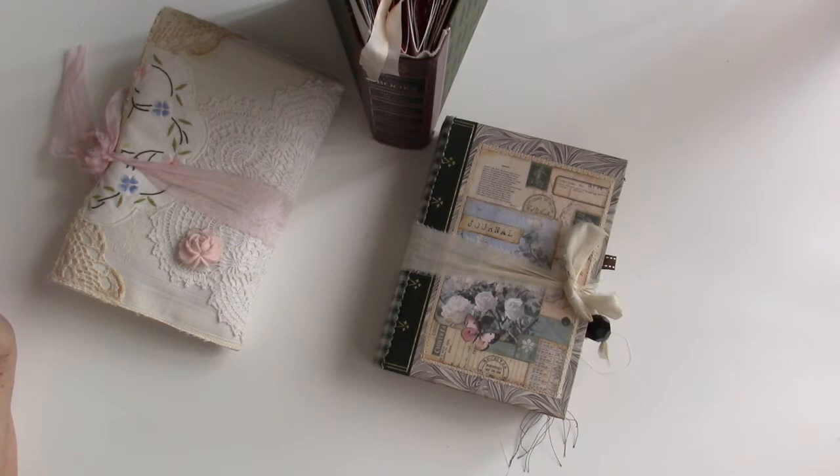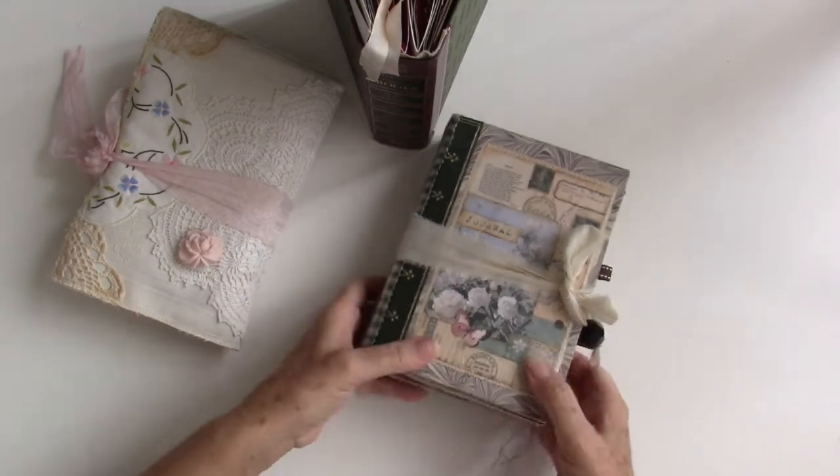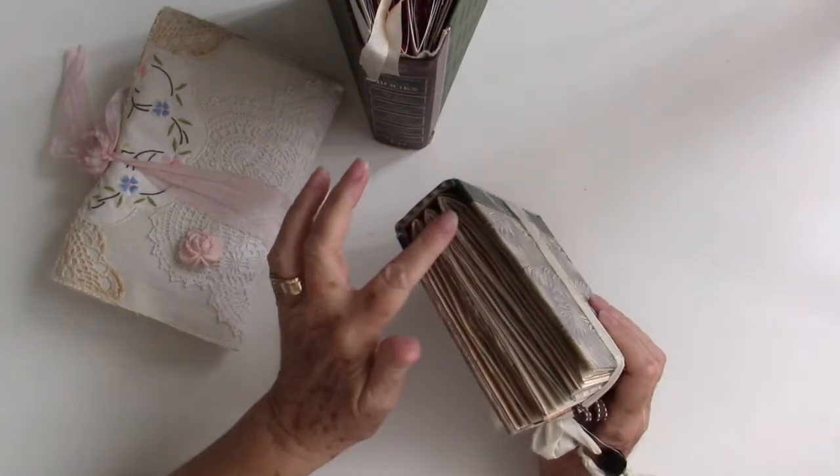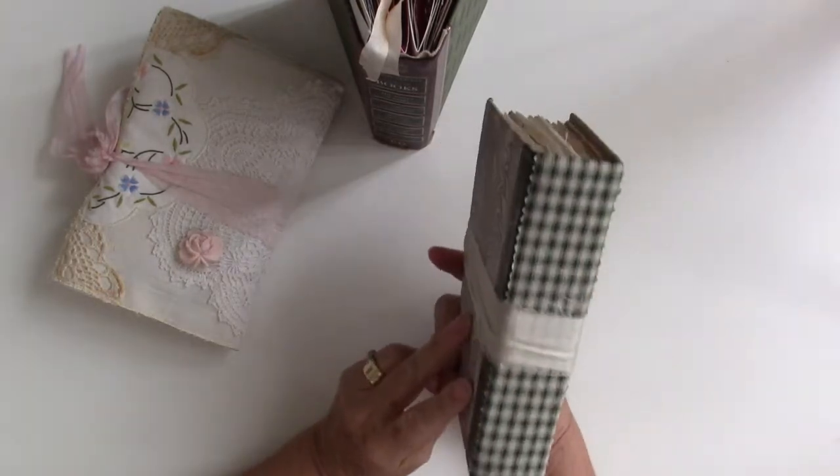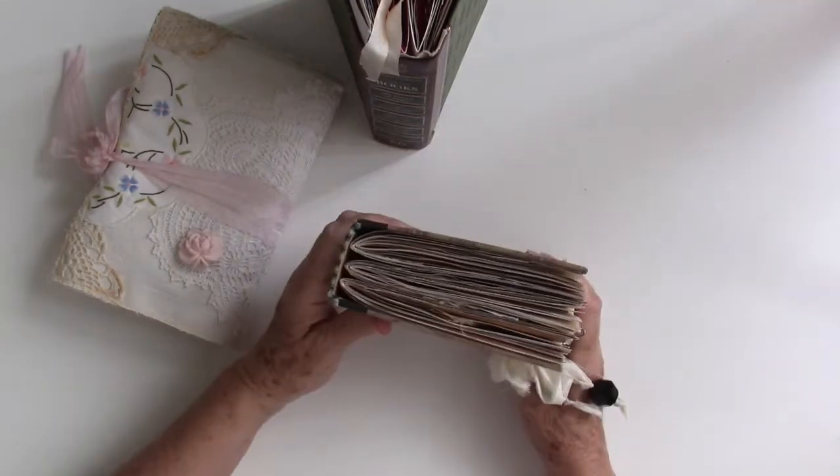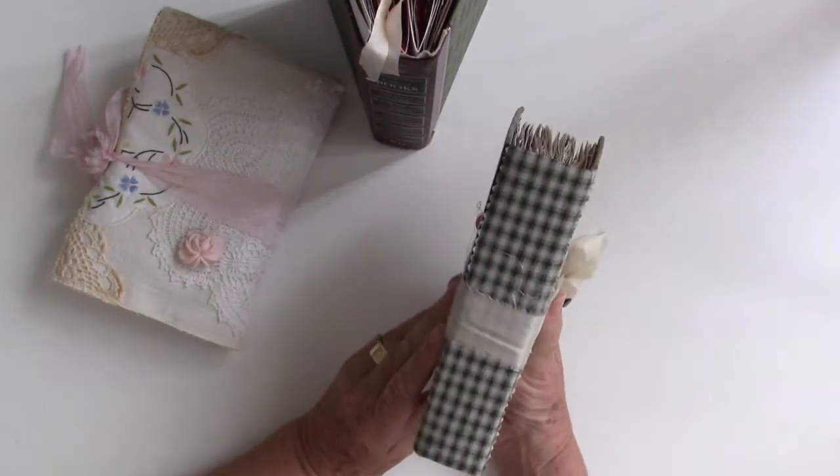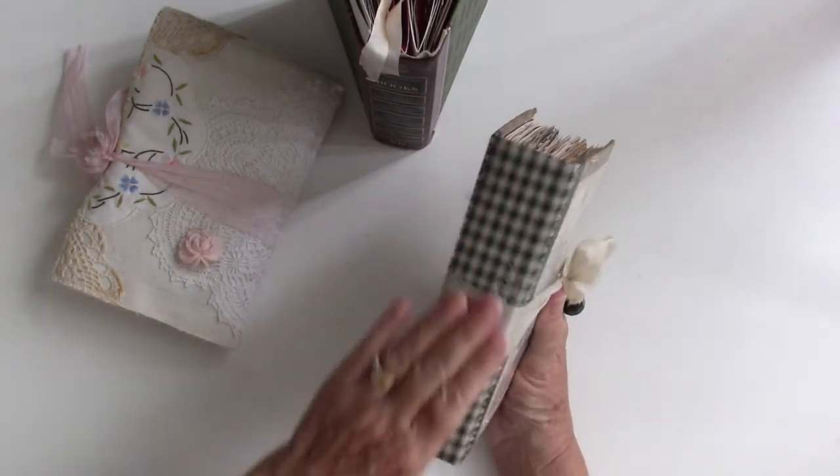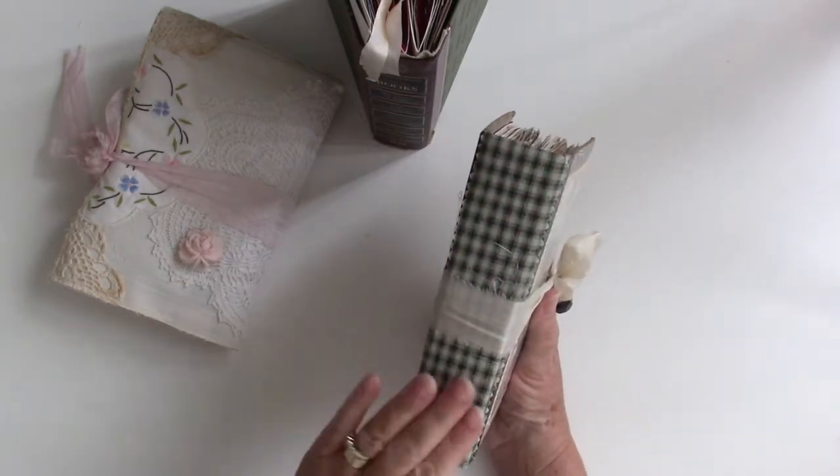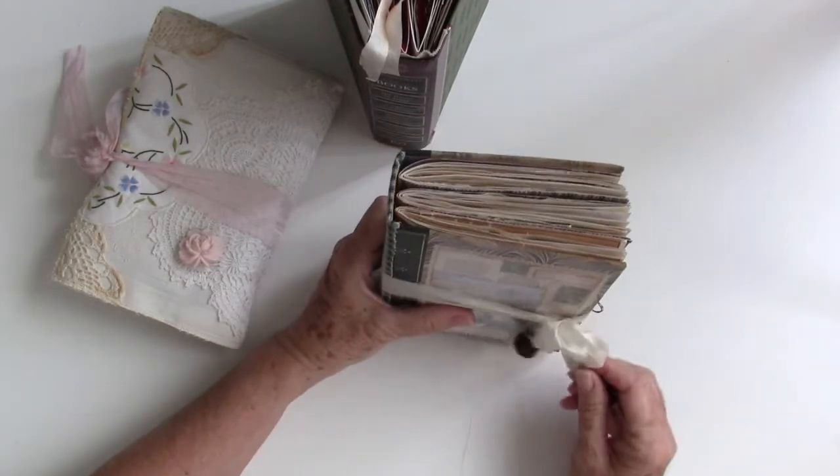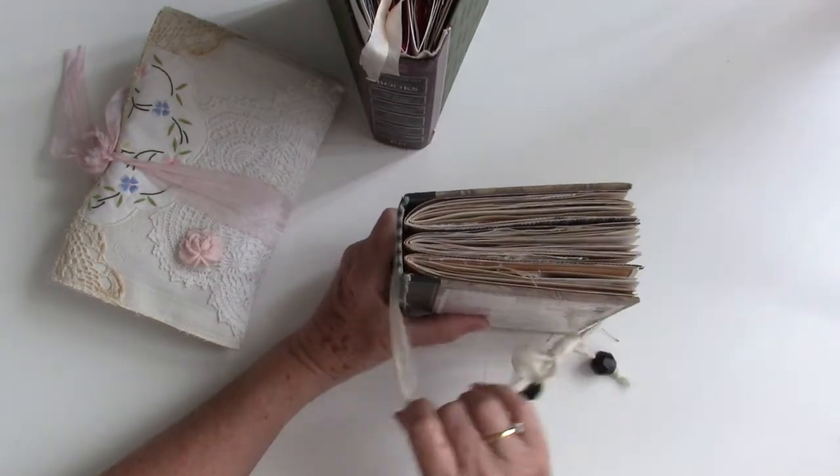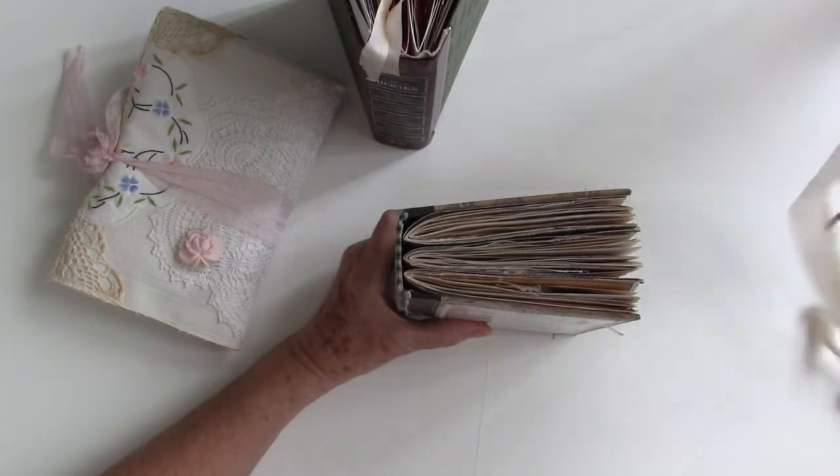Today I'm making a short video in answer to a question I received about how I attach these pages, these signatures, to my journal, which is a repurposed Reader's Digest cover. The person who asked the question realized that there were no threads showing on this side and, probably as a newbie, wondered how to achieve this look.